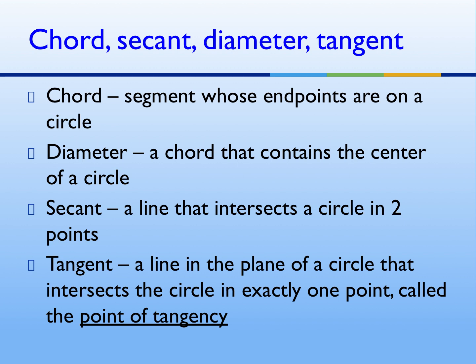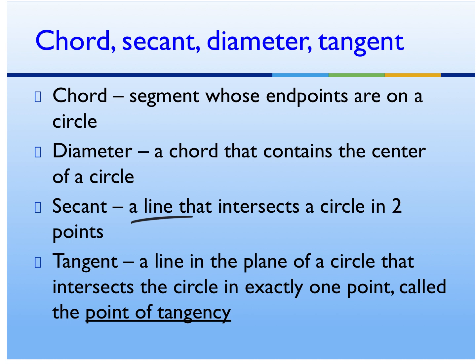The next three are the formal definitions for chord, secant, diameter, and tangent. A chord is a segment whose endpoints are on the circle. A diameter is a chord that also contains the center of the circle — it must pass through the middle. A secant is a line — underline the word line — that intersects a circle in two points. A tangent is a line in the plane of a circle that intersects the circle in exactly one point, called the point of tangency.